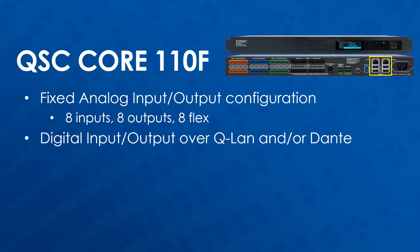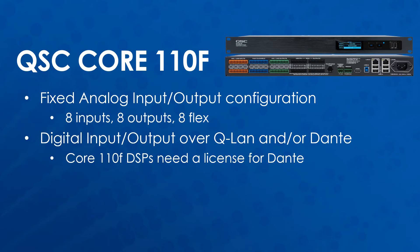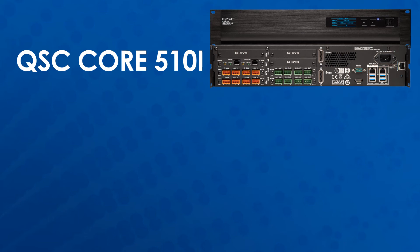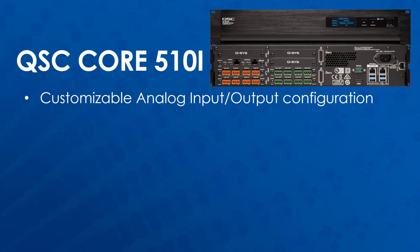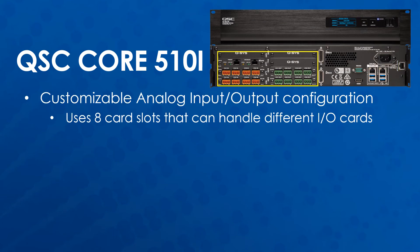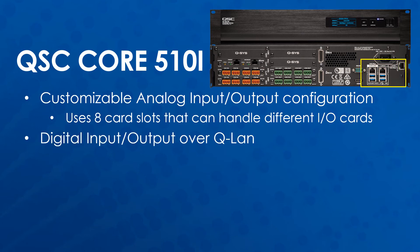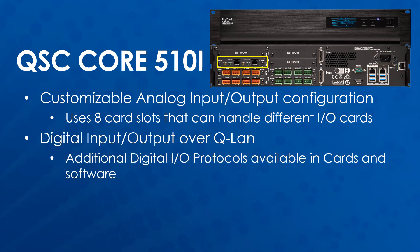The 110F also has digital inputs and outputs from other devices over QLAN and/or Dante. Core 110F DSPs generally need a license for Dante to be activated, though newer cores ship with a few channels of Dante functionality. With the Core 110F being a fixed input-output configuration, if one of the connections were to have any problems, the whole unit would need to be repaired or replaced. The Core 510i, as well as older models 500i and 250i, have a customizable input and output configuration using eight card slots that can handle different IO cards. This makes these cores much more flexible with local IO and has the added benefit of being able to replace or add cards if needed. These cores also have digital inputs and outputs from other QSC devices over QLAN, as well as additional protocols like Dante through IO cards and/or software.